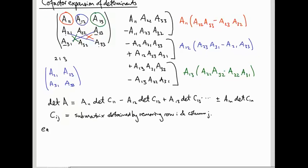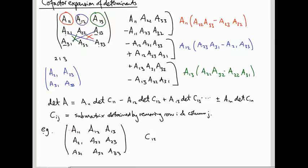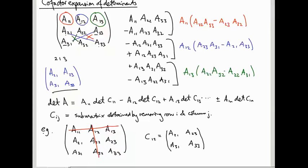For example, consider the matrix with entries A11, A12, A13, A21, A22, A23, A31, A32, A33. What would be the submatrix C12? We remove row 1 and column 2, so we're left with A21, A23, A31, and A33 — which is exactly the matrix whose determinant, or minus its determinant, is the coefficient in the A12 term.